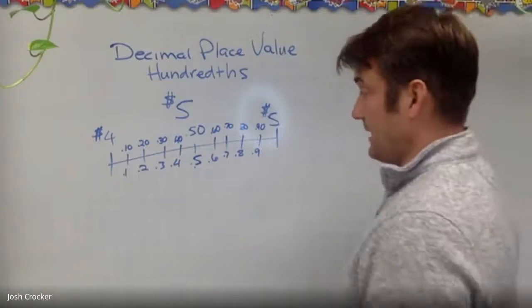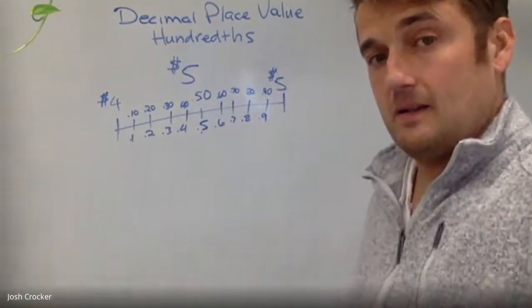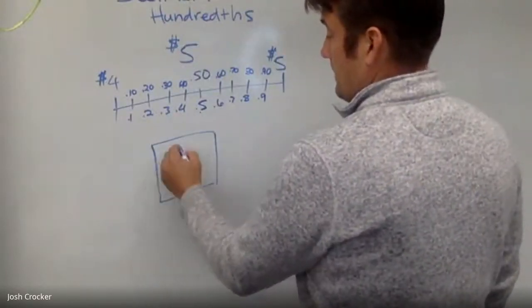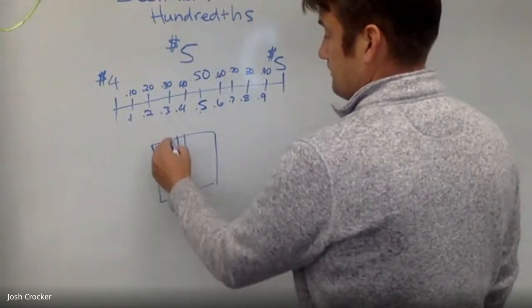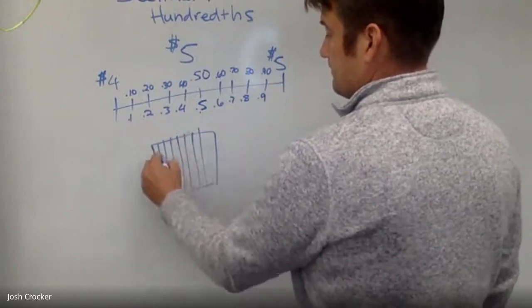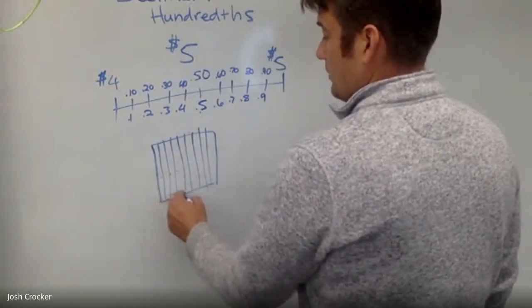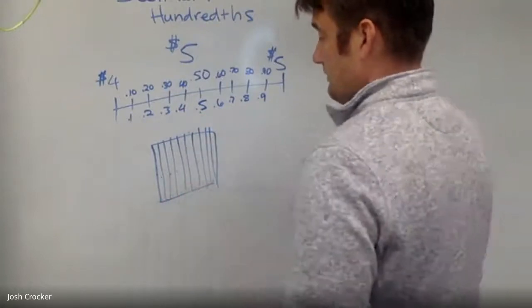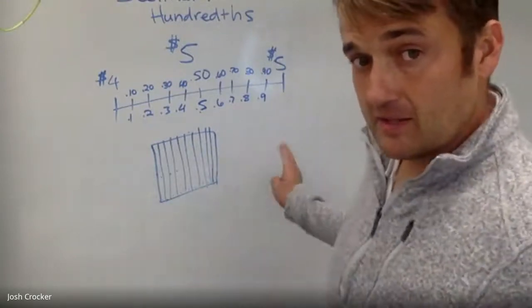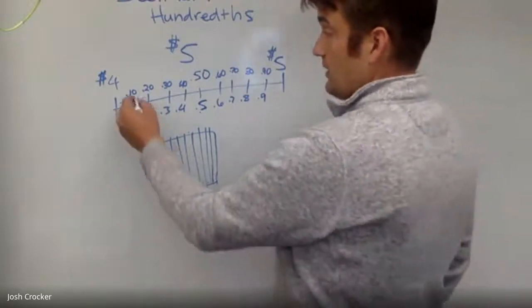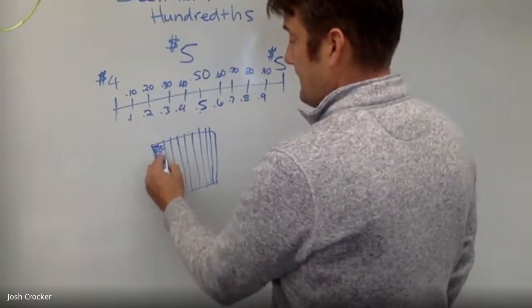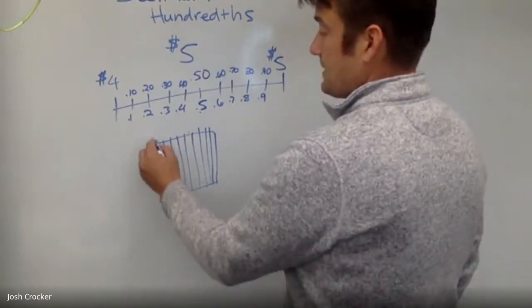That's because in my model here — remember this — those are tenths, ten sections. If I color in two of them, that's two tenths.